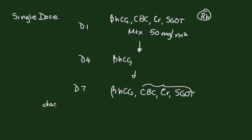If your day four beta-HCG to day seven beta-HCG does not decrease by 15% or more, then we would consider that a treatment failure. So this has to decrease greater than or equal to 15%. If it does not decrease by 15%, then you would repeat methotrexate on day seven.